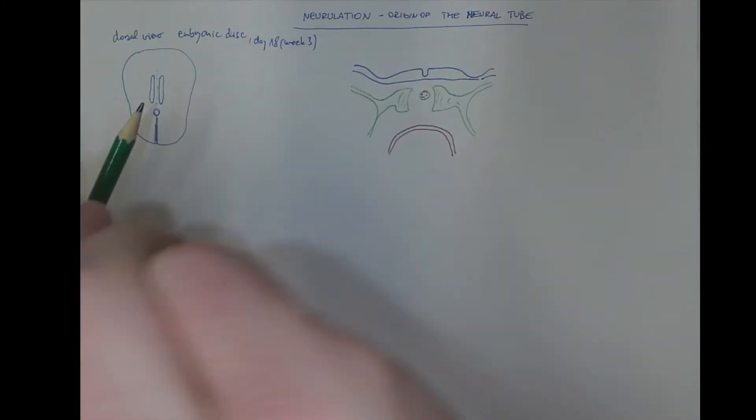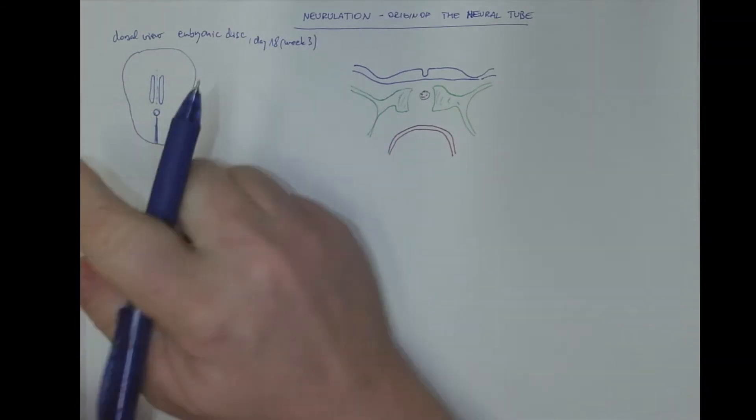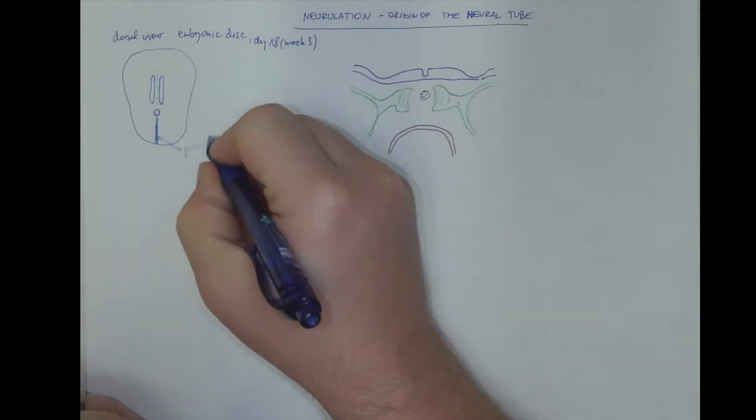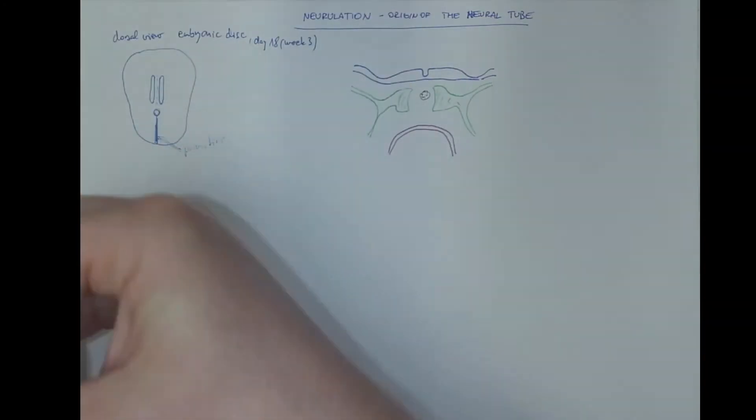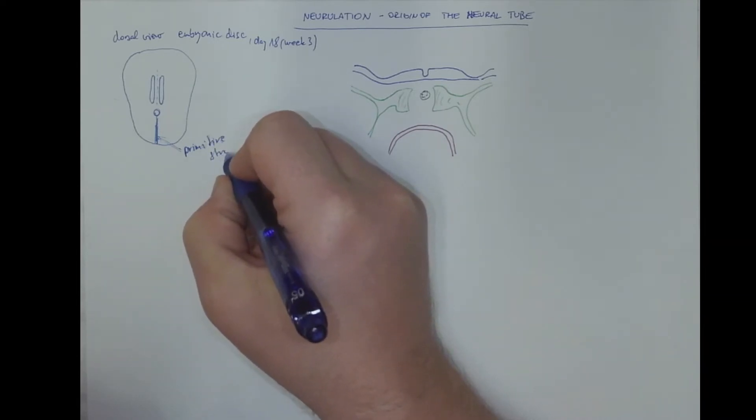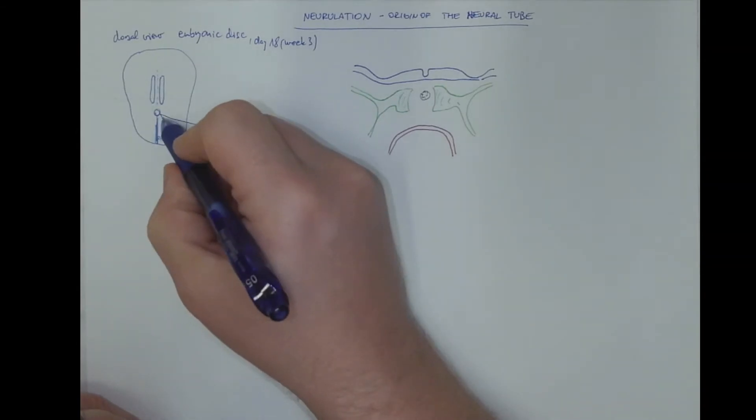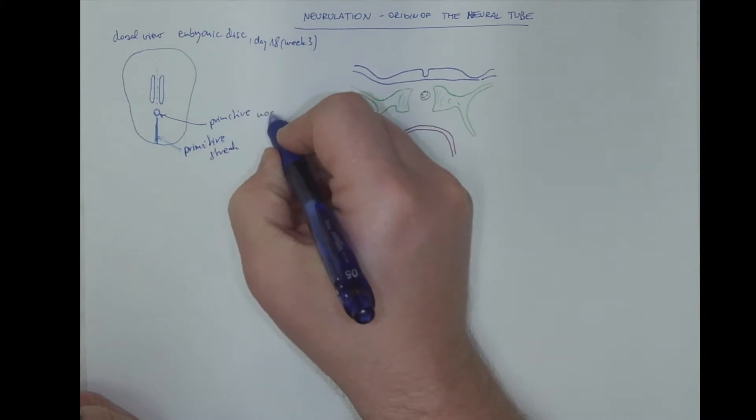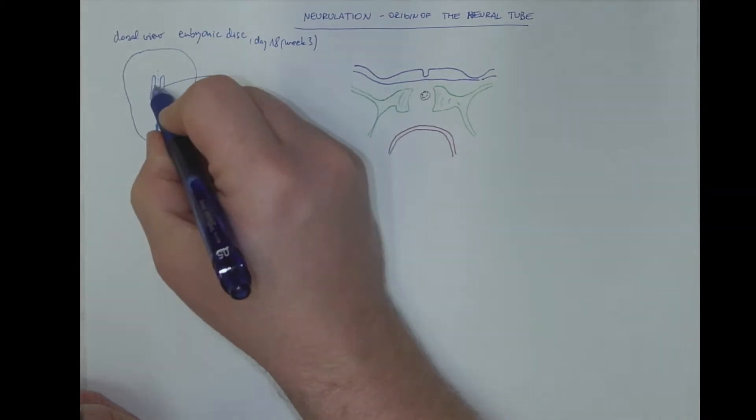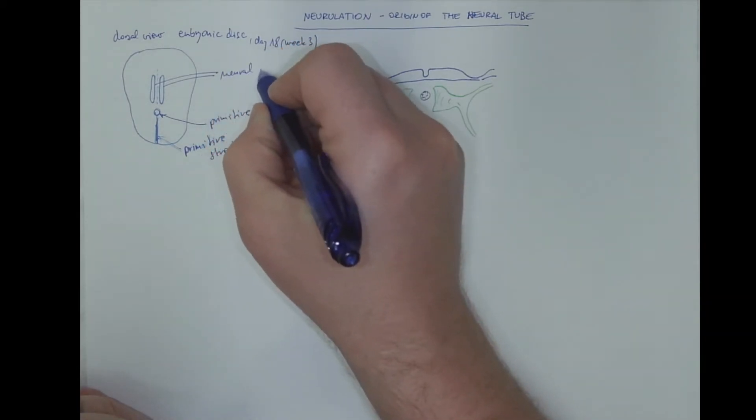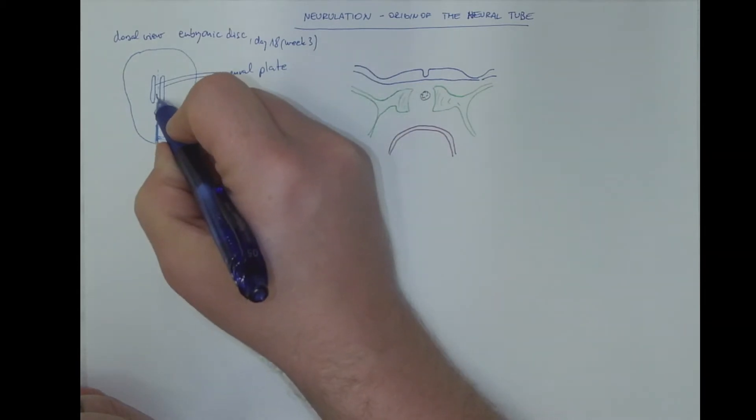So let's label the structures. This is the primitive streak which ends with the primitive node. And the planar view on the neural plate and the neural groove in between.